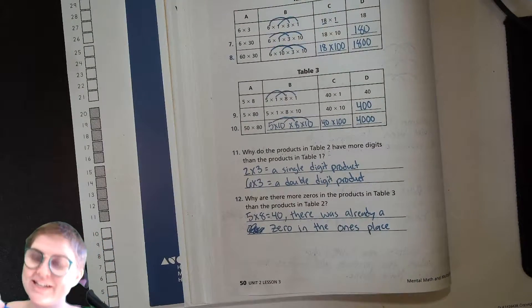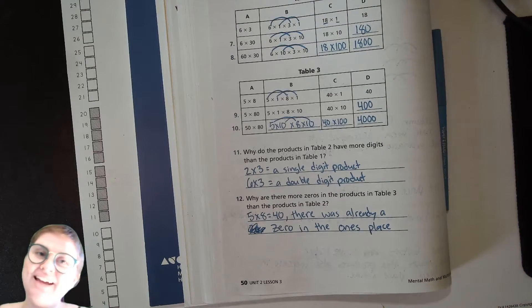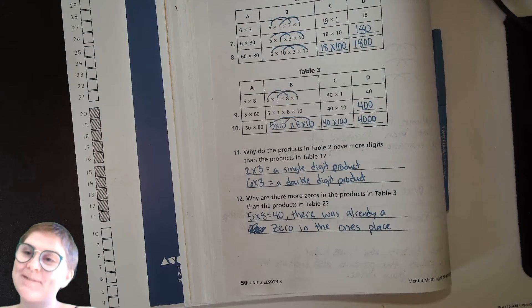Five times eight equals 40, there was already a zero in the one's place. Now go and check and see if you have an assignment for today. And I'll catch you next time. All right. Bye.